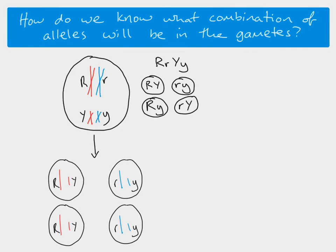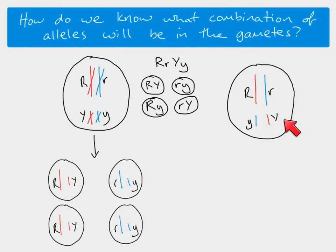We'd end up with four daughter cells in total. Thinking about what we learned about independent assortment, we know that the chromosomes could line up in a different order. So there's our first pair of chromosomes, and in this example our second pair is lined up the opposite way around, which will then lead to a different combination of alleles in our gametes.